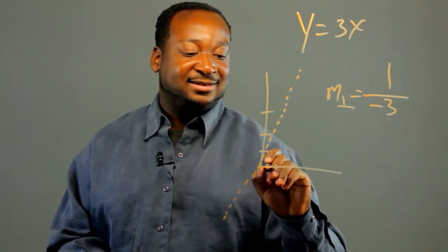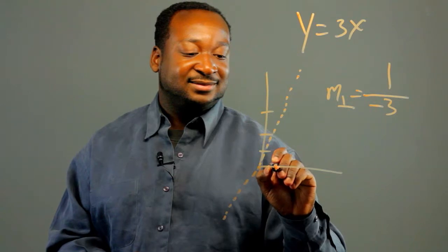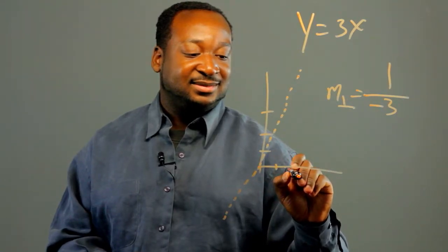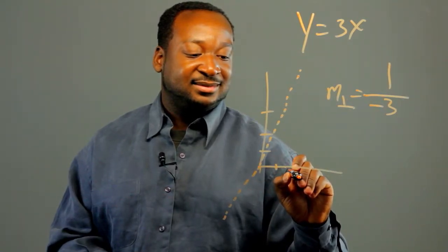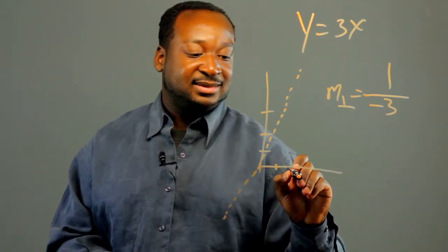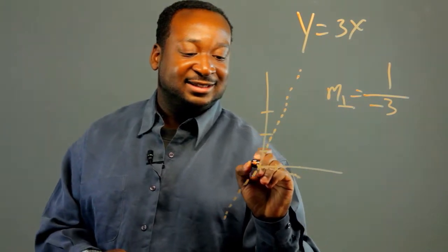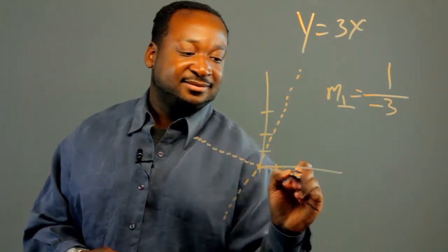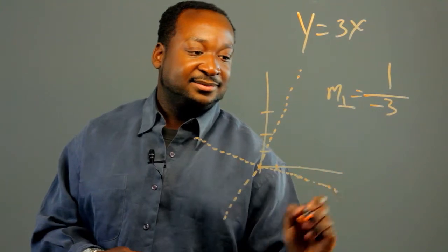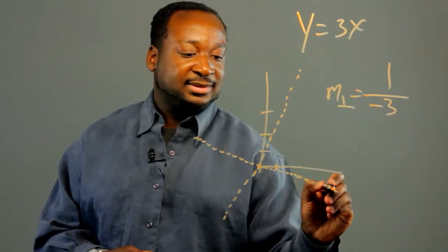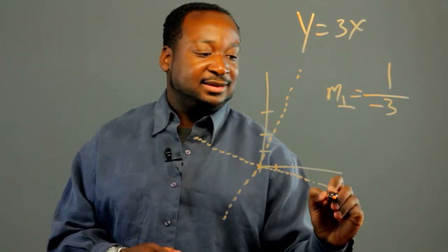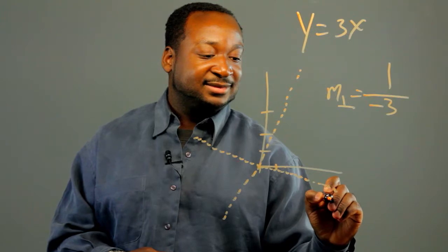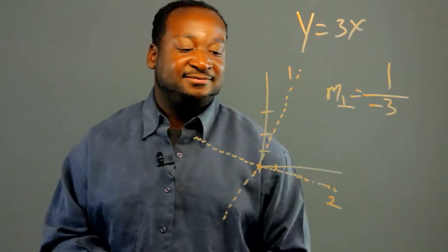So it'll look like this. Let's plot it. It'll look something like this. There's line 2 and there's line 1.